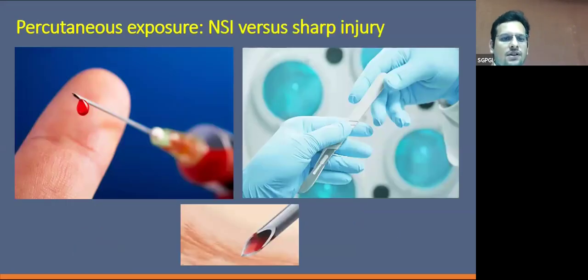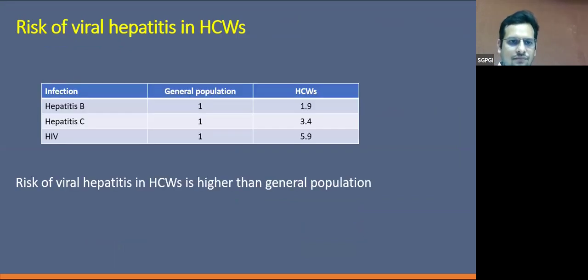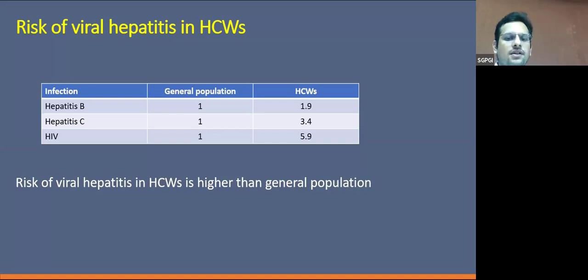These are the sharp and needle stick injury instruments. The consequences of needle stick injuries include hepatitis B virus measured by HBsAg, hepatitis C virus measured by anti-HCV, and HIV. The risk of transmission of viral hepatitis in healthcare workers relative to the general population is 1.9 for hepatitis B, 3.4 for hepatitis C, and 5.9 for HIV.